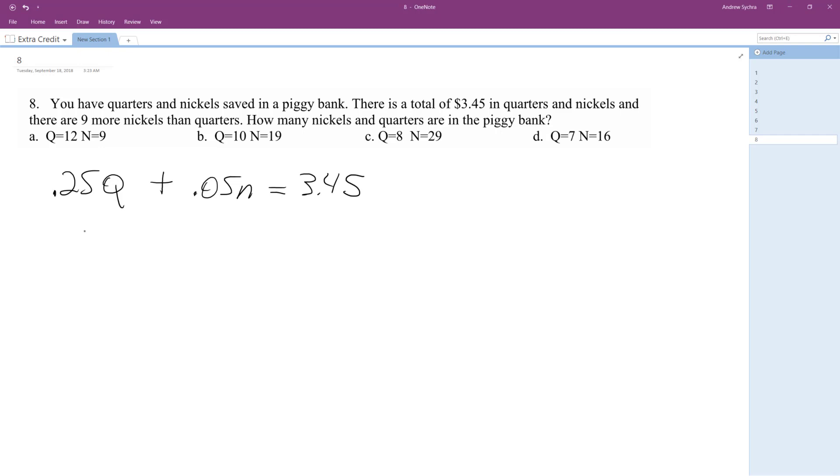So there's nine more nickels than quarters. You can write this a couple ways, but subtract nine from quarters—nine more nickels. We can sub this in for nickels. So N equals Q minus nine.